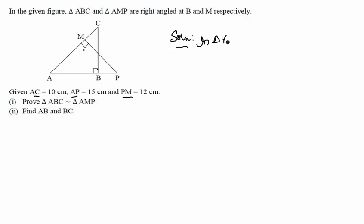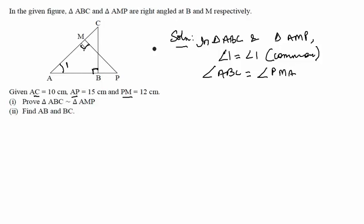So in triangle ABC and triangle AMP, this angle, angle 1 is common. So angle 1 is equal to angle 1 common. Angle ABC is equal to angle PMA. These two angles, they both are 90 degrees each. So therefore the two triangles are similar by AA similarity.